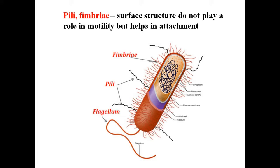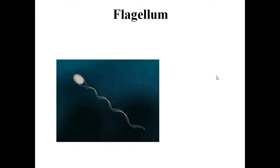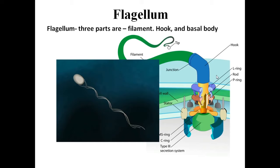Bacterial cells may be motile or non-motile. If motile, they have thin filamentous extensions from the cell wall called flagella. Bacteria show a range in the number and arrangement of flagella. The bacterial flagellum is composed of three parts: filament, hook, and basal body. The filament is the longest portion and extends from the cell surface to the outside.